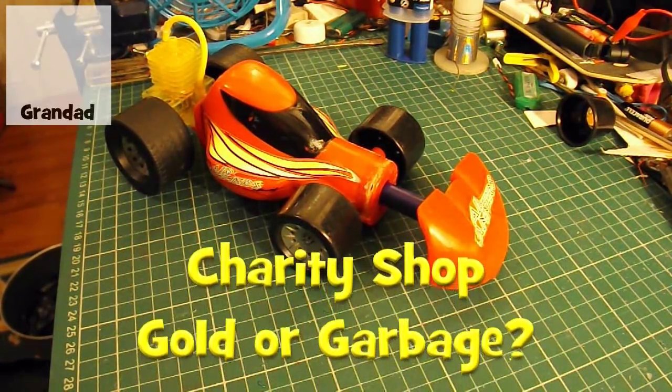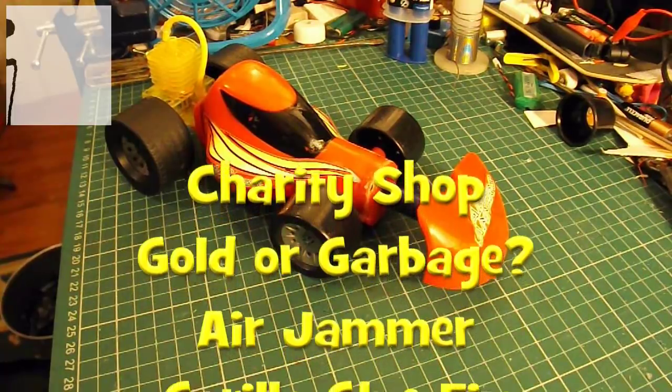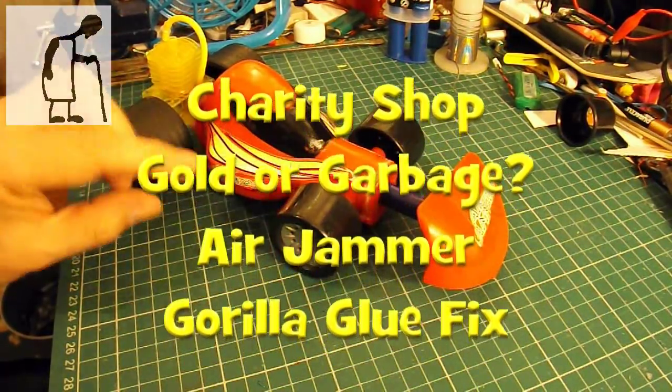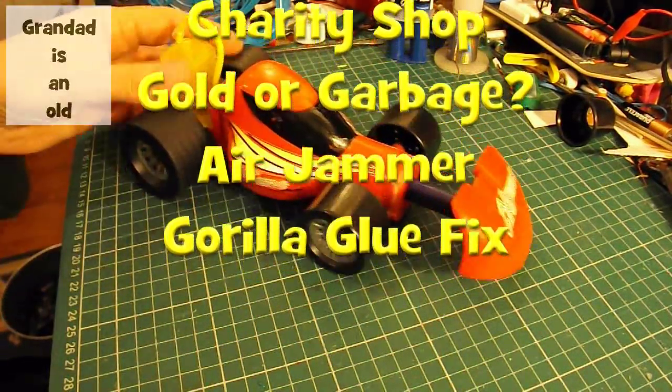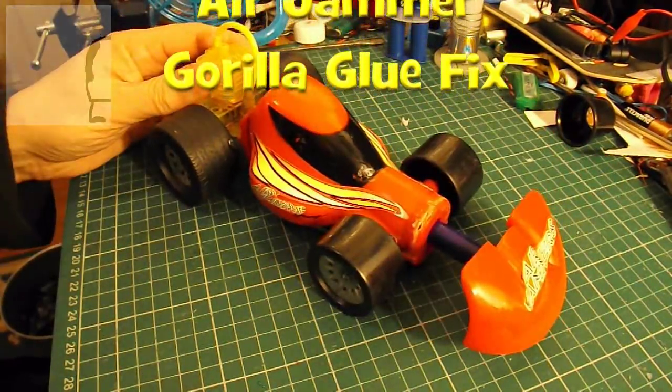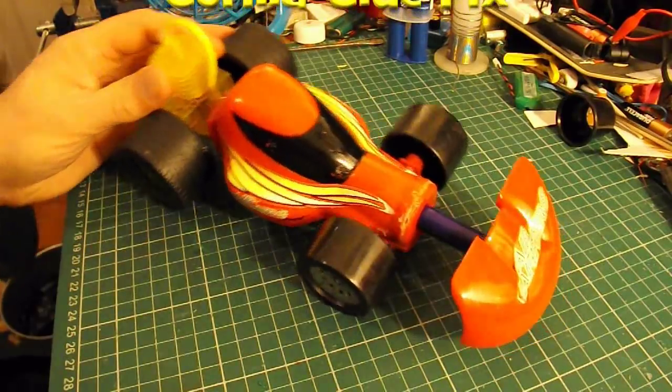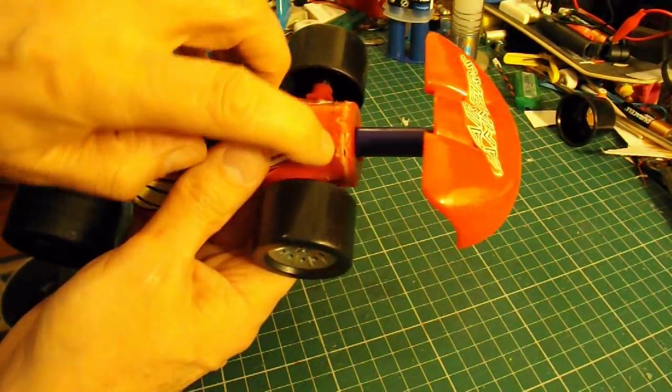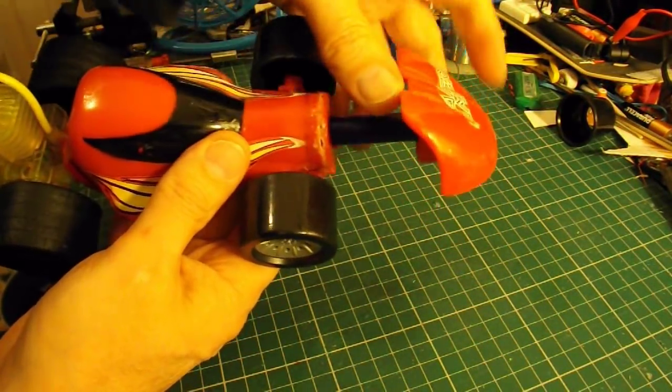Not quite sure whether this counts as episode 3 or 4 regarding this air jammer air engine car. In the previous episode I managed to get it apart, get this front section out which removes the air pump.